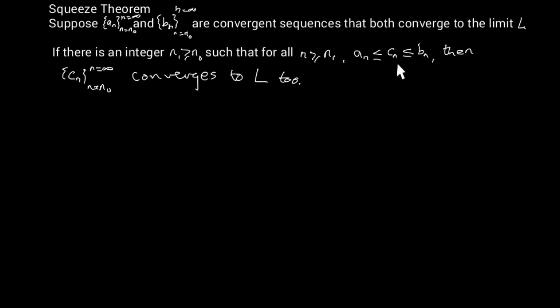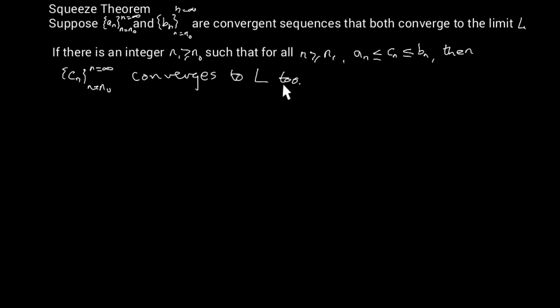...c_n, a third sequence, is between a_n and b_n — it's bigger than a_n but less than b_n. Then we say that c_n, from n₀ to infinity, converges to L as well.